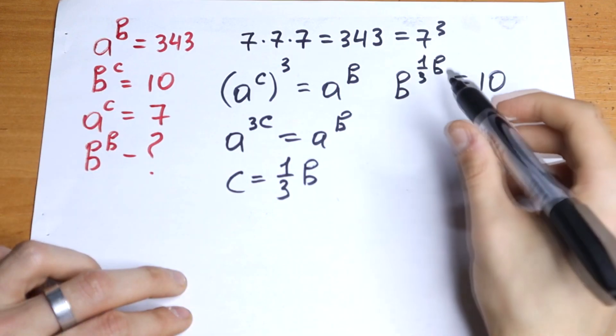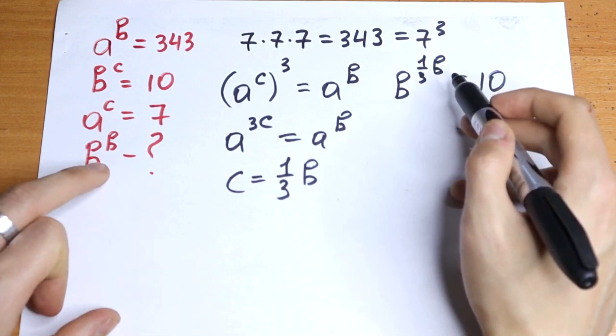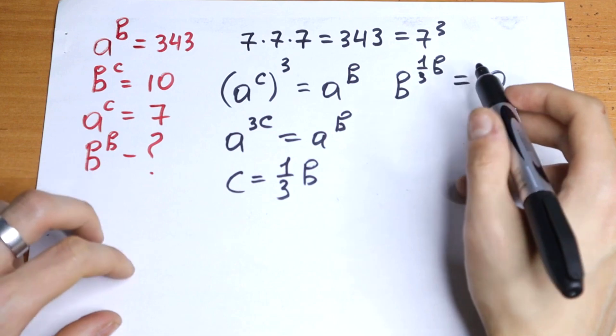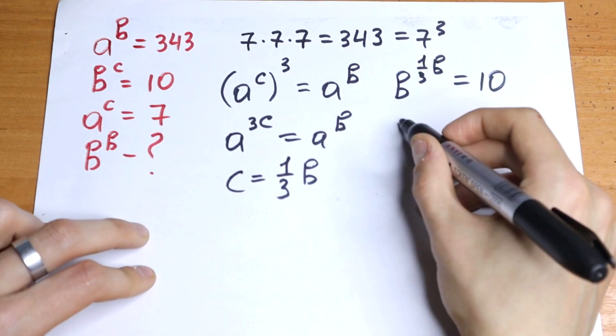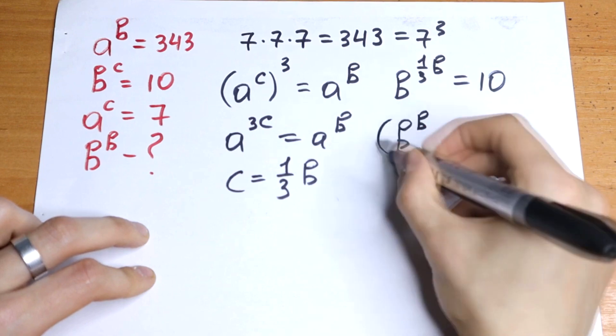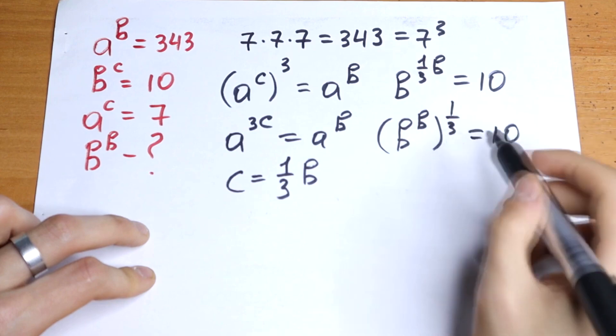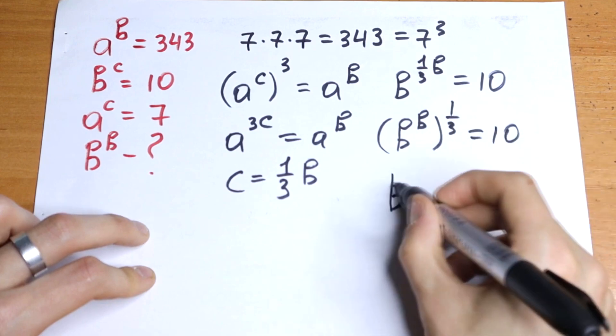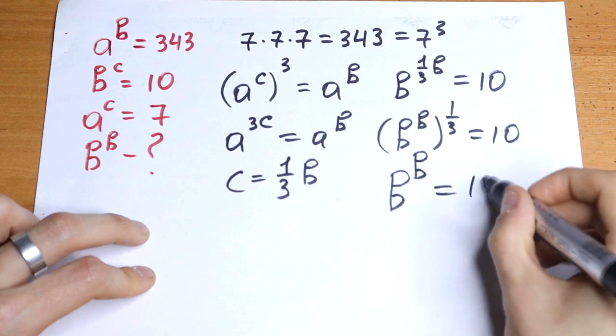What we are going to do next? We have 1 over 3 right here but we don't need 1 over 3 right here. So we raise both sides to the 3rd power. So I write it in the next way: b to the power b to the power 1 over 3 equals 10. Raise both sides to the 3rd power and we have our answer, b to the power b equals 1000.